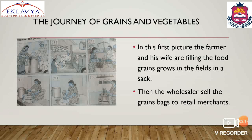Now the second topic is the journey of grains and vegetables. Kya aapne socha hai ki aapke ghar mein jo bhi khaane-peene ki suvidhaein aapko mil rahi hain, wo kahan shuru hoti hain aur kaise aap tak pahunchti hain? In this first picture, the farmer and his wife are filling food grains grown in the fields into a sack — ek kisan aur uski patni, jinke khet mein bahut saara anaaj hua hai.